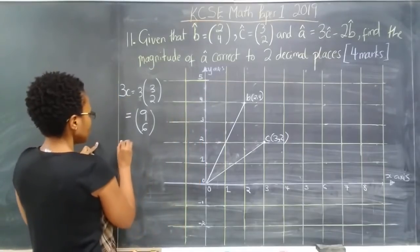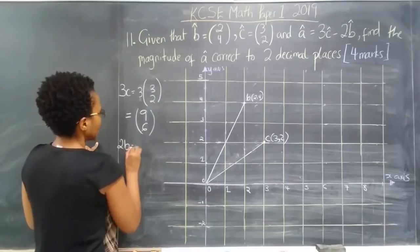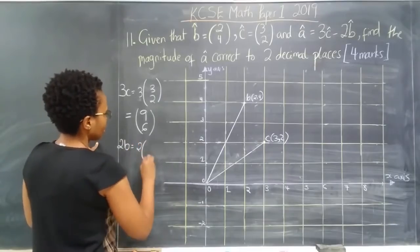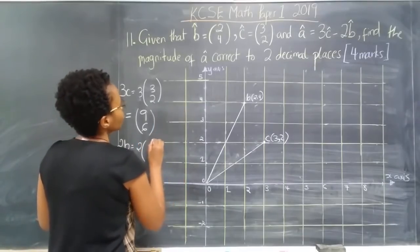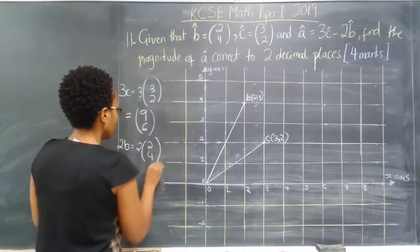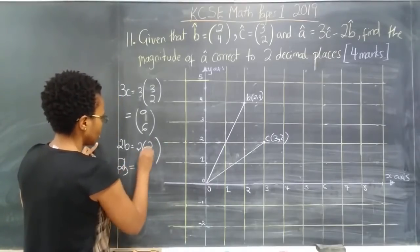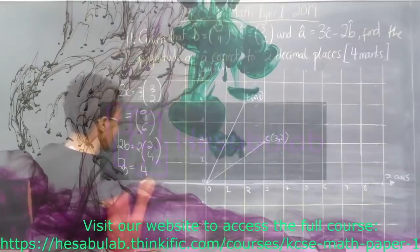And then 2B now. So 2B is, again, now twice, and B is (2, 4). So here our 2B is 2 times 2 is 4, 2 times 4 is...